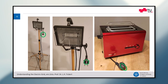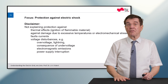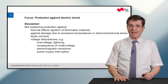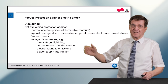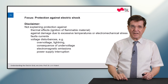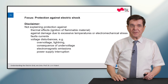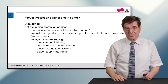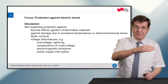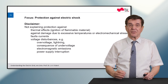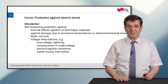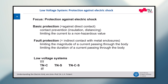Look here at these three little round circles — they are the protective earth wire which saves our life. Since life is such a sensitive matter, I want to give a full disclaimer. I will not talk in this lecture about protection against thermal effects, for example a high-temperature wire starting to ignite a fire, nor about damage due to excessive temperatures or electromechanical stress like vibration due to fault currents. I will also not go into details for voltage disturbances, for example through overvoltage lightnings, or the consequence of undervoltage or electromagnetic emissions.